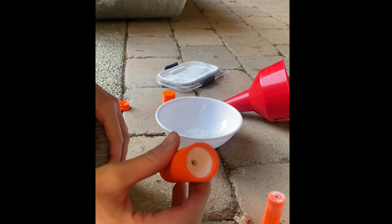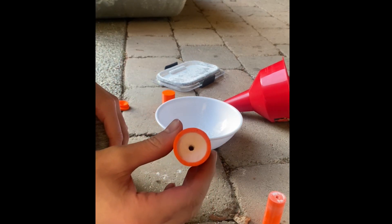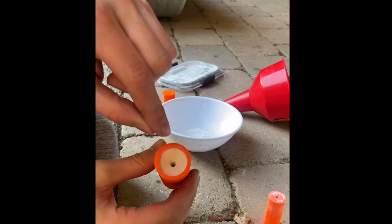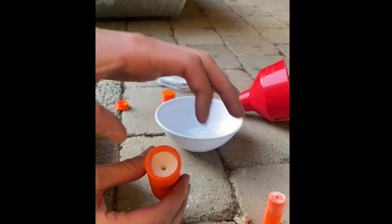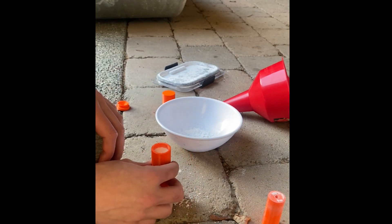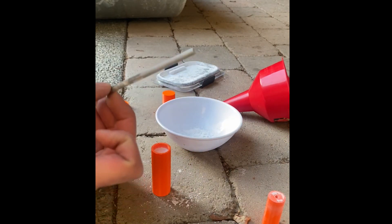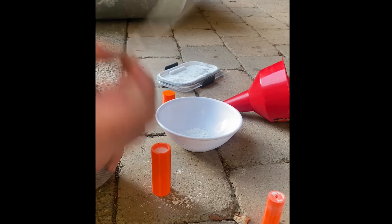There we go. So we lost a little bit of propellant, but now you can see we have a shaft, and that shaft will allow this rocket motor to burn from the inside out. Very important. Very difficult to get this out. That is the hardest time I've had, of course, on camera, I've had.